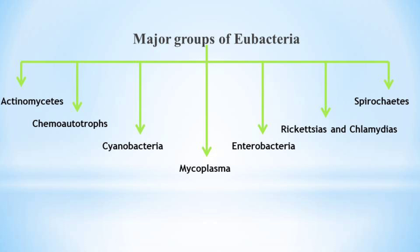The second group is Chemoautotrophs, which obtain energy from inorganic chemicals such as hydrogen sulphide, ammonia, and methane. They play a key role in nitrogen fixation — for example, Nitrobacter and Nitrosomonas. The third group is Cyanobacteria, the photosynthetic bacteria — for example, Anabaena, Nostoc, and Spirulina.